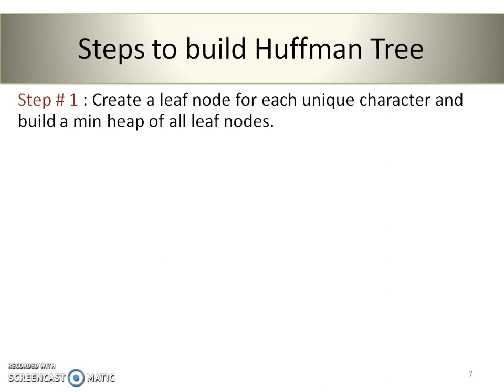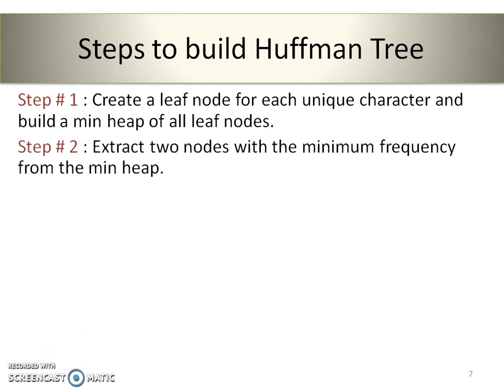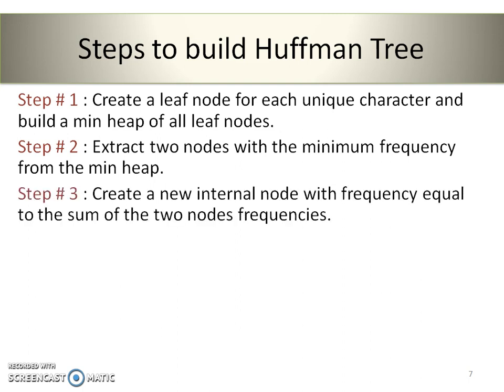Step 1: Create a leaf node for each unique character and build a min-heap of all leaf nodes. Step 2: Extract the 2 nodes with the minimum frequency from the min-heap. Step 3: Create a new internal node with frequency equal to the sum of the 2 nodes' frequencies.